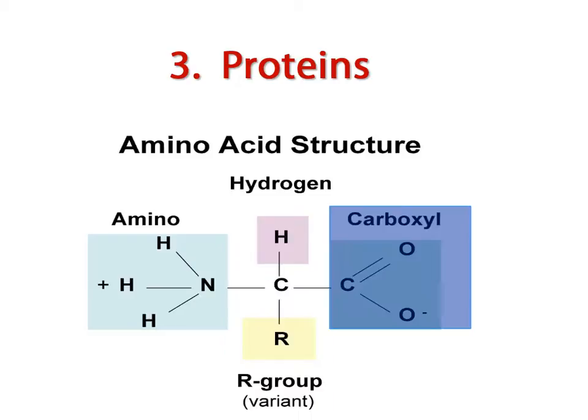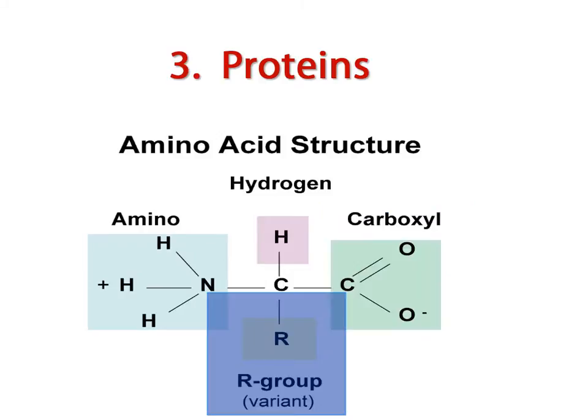And a carboxylic acid ending. Amino acids are distinguished by the attached radical group, or R group, that is often referred to as the side chain.